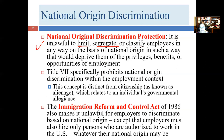Both Title VII and IRCA prohibit national origin discrimination. It's not unusual to see the same protections in more than one statute. IRCA has two important differences from Title VII. First, IRCA applies when there are only four employees, whereas Title VII starts applying at 15 employees — so IRCA extends Title VII's scope for smaller employers. Title VII became law in 1964; IRCA in 1986.